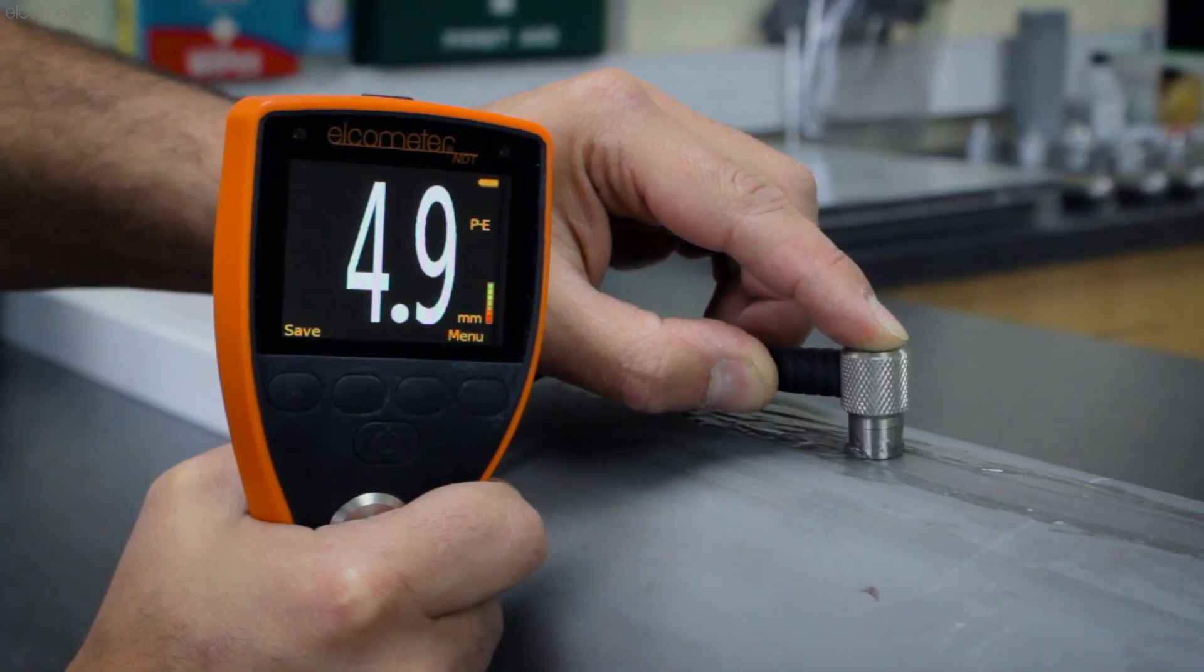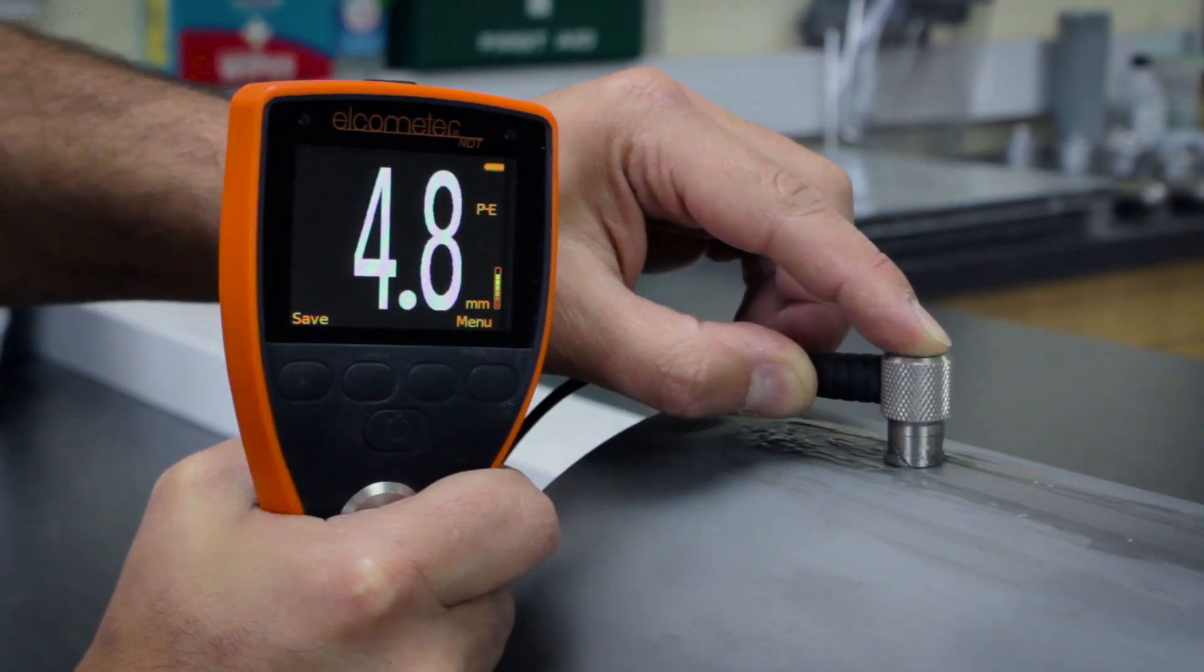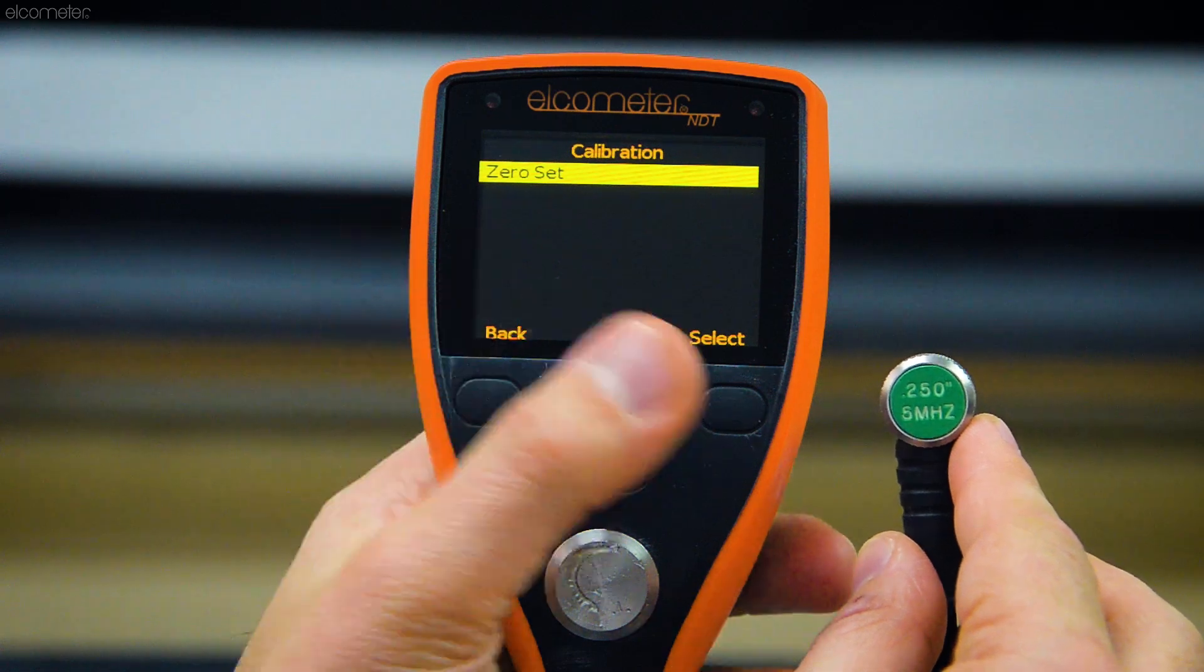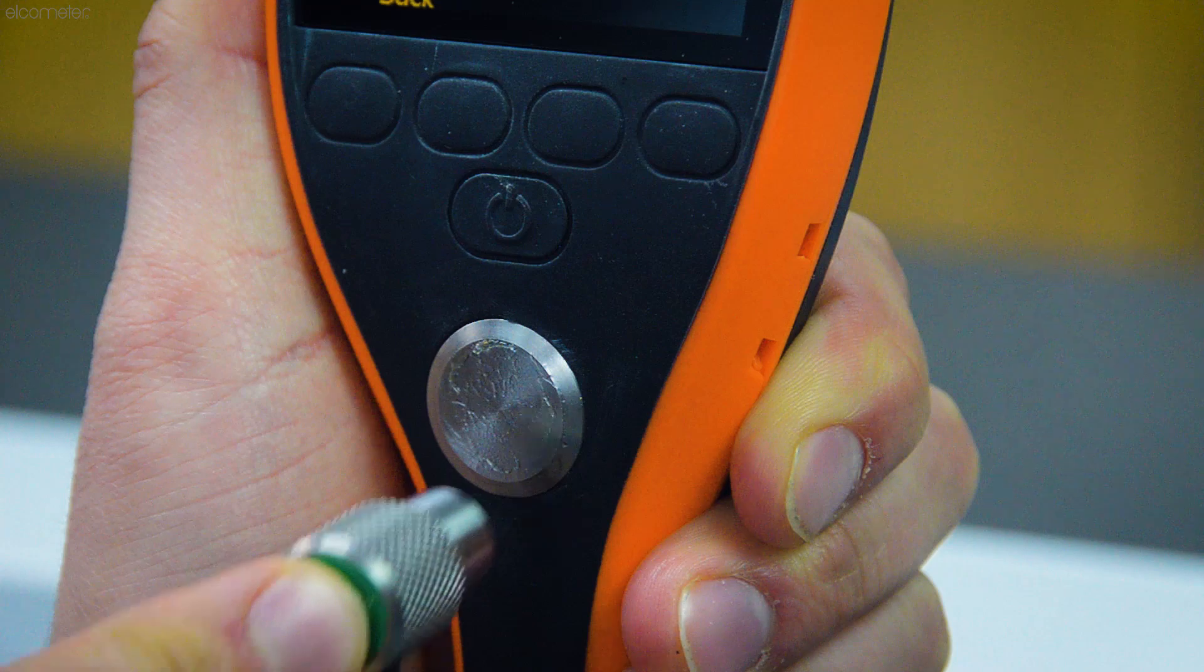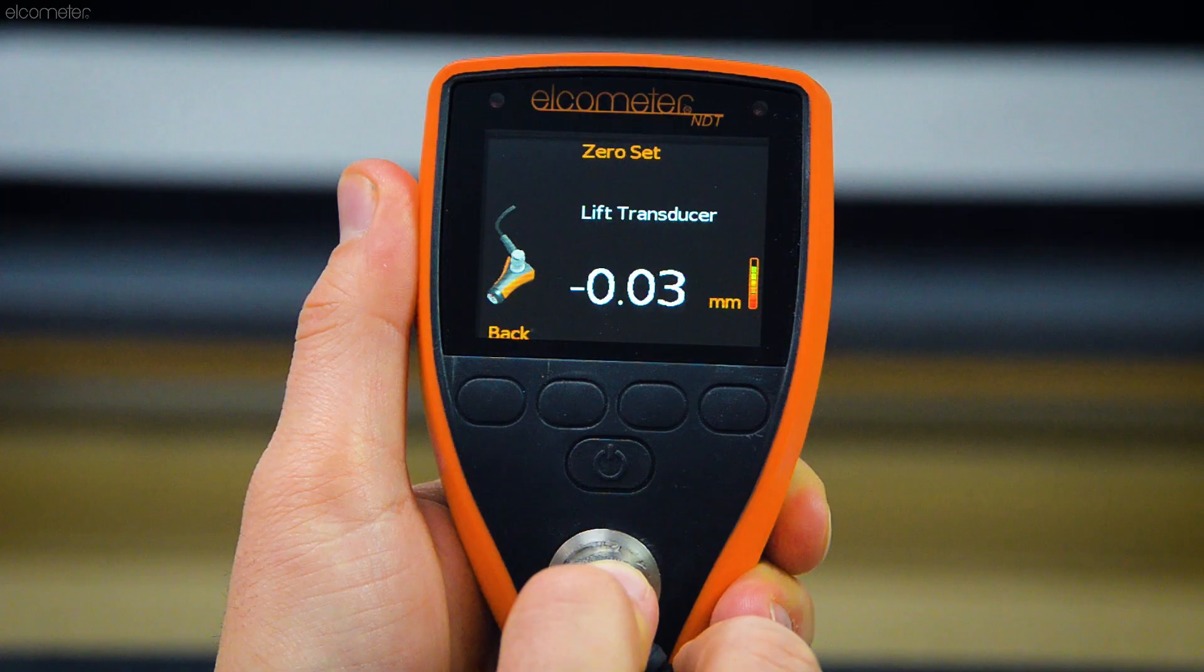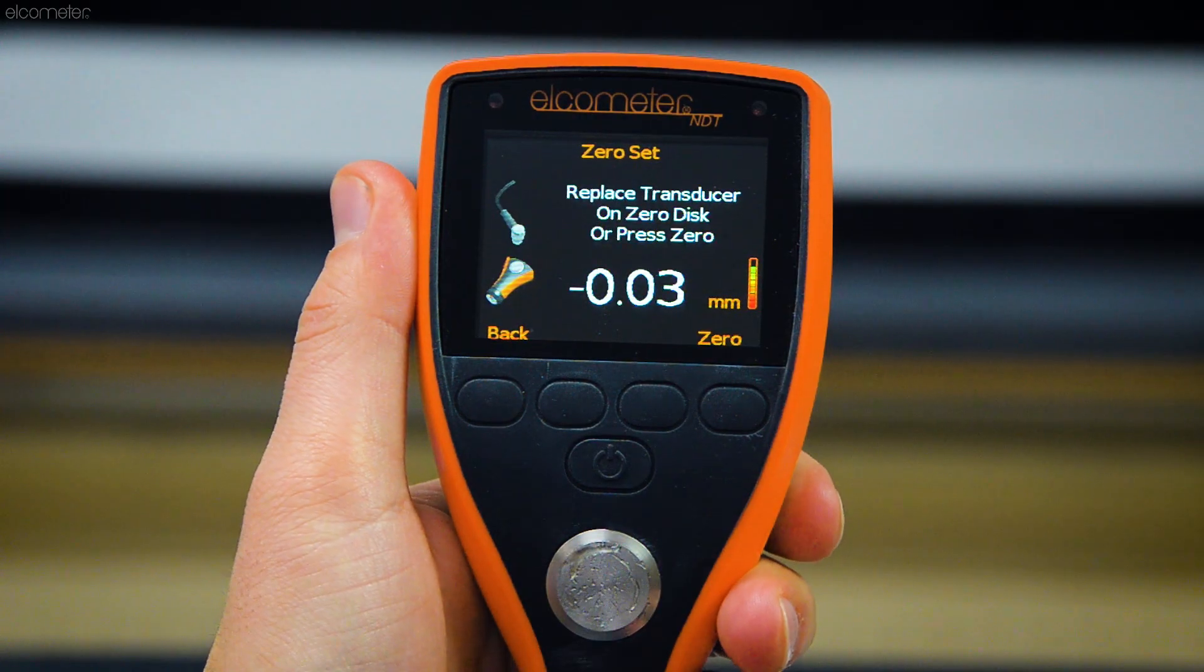And maintaining the gauge's accuracy couldn't be easier. Pre-calibrated specifically for steel, the Elcometer MTG2 is ready for you straight out of the box. Simply zero point calibrate using the integrated zero disc to ensure accuracy at all times.